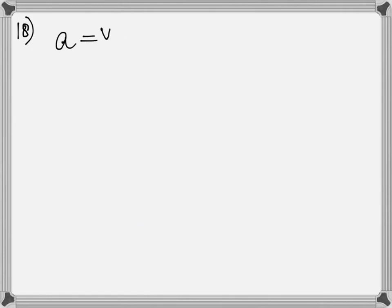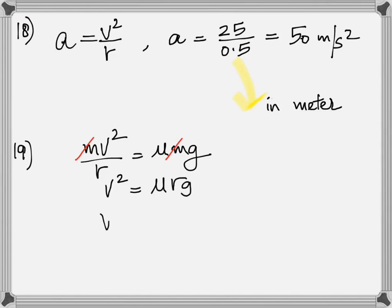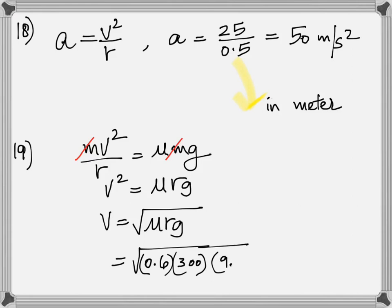Number 18. You are asked to calculate the acceleration of the ball. Any object moving in a circle has centripetal acceleration given by V squared by R. What's the velocity here? 5, radius is in centimeters, change it into meter, 0.5. So the answer is 50 meter per second squared. Number 19. It's a flat curve, no banking. So the only force that keeps it on the road is friction. MV squared by R equals mu Mg. Square root 0.6 times the radius 300 meter times 9.8. You get the answer, 42 meter per second.